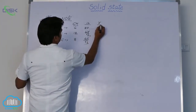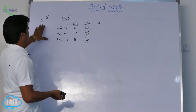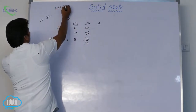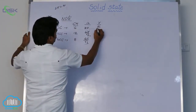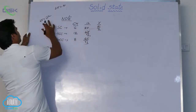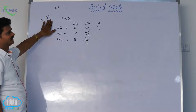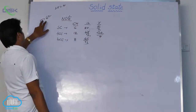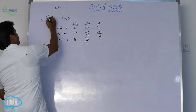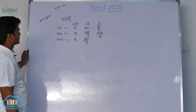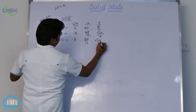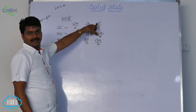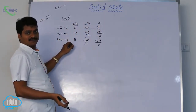Next, what is the formula for radius? We use the same relations. In simple cubic system, 2R is equal to A, so R is equal to A by 2. For FCC, 4R is equal to root 2A, so R is equal to root 2A by 4. For BCC, 4R is equal to root 3A, so R is equal to root 3A by 4. These are the formulae related to the radius of atoms in different cubic systems.